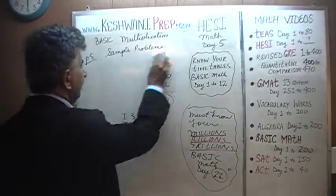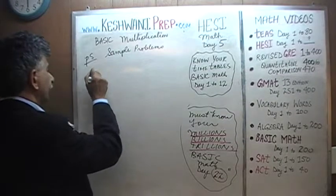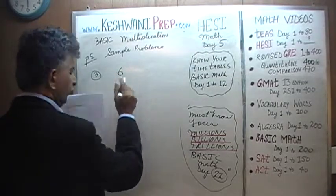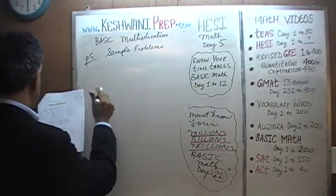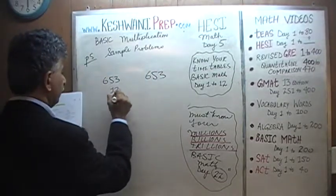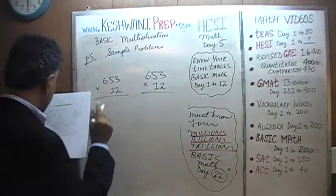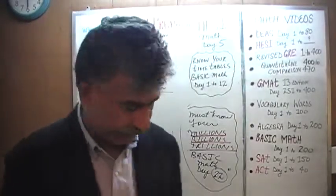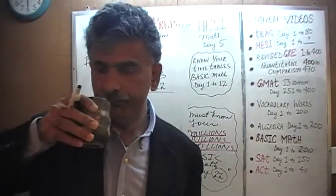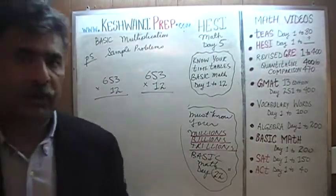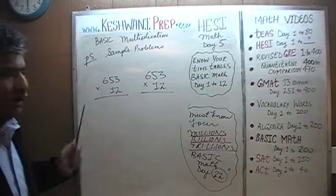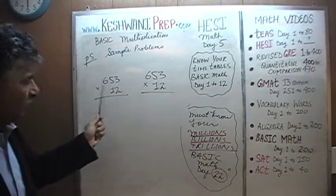Number 3: 653 times 12. We're going to do this problem twice — first multiplying by 12 directly, like a grown-up, and then the traditional baby-step way. Let's multiply 653 by 12 directly, not by 2 and then 1 separately. You must know your times tables for 12.